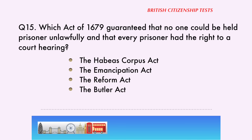Question 15. Which act of 1679 guaranteed that no one could be held prisoner unlawfully and that every prisoner had the right to a court hearing? The Habeas Corpus Act, the Emancipation Act, the Reform Act, the Butler Act. The correct answer is... The Habeas Corpus Act.